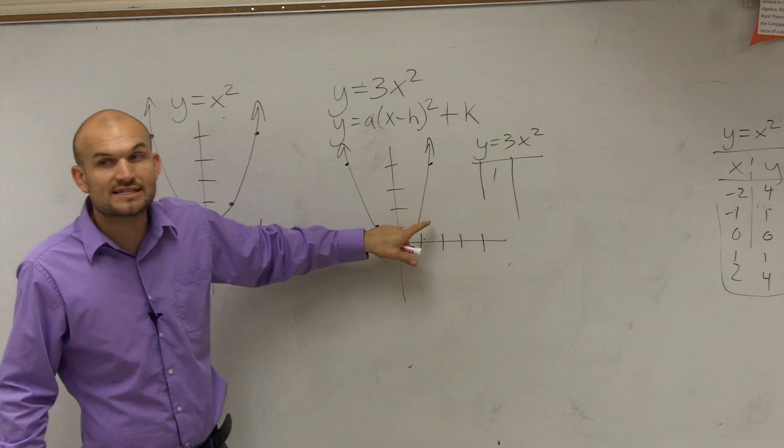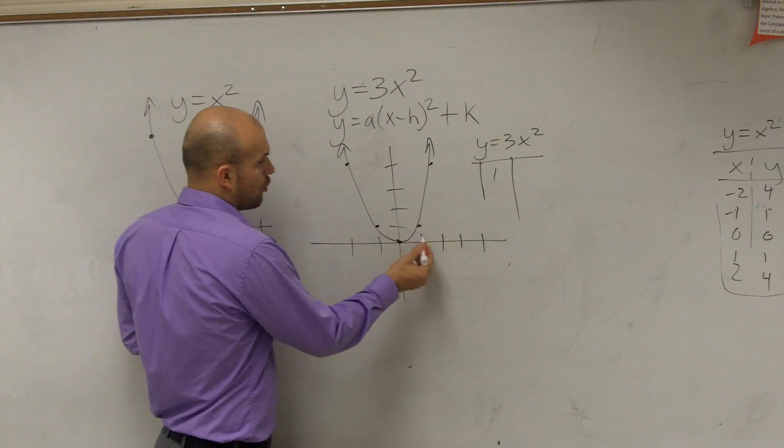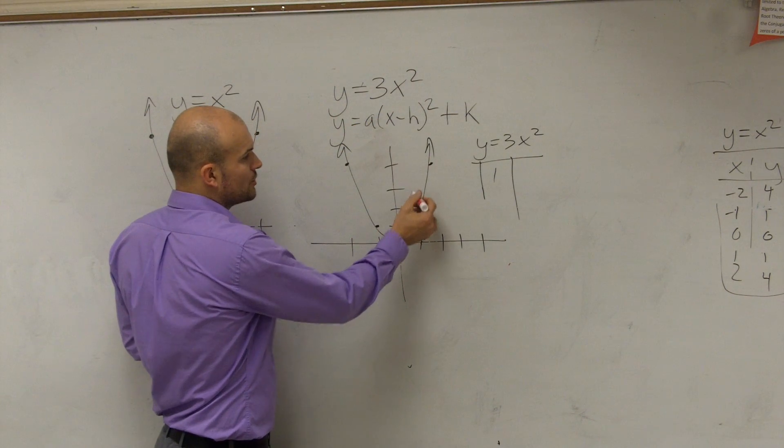But now it's 1 squared times 3. So I'm going to go over 1, up 1, 2, 3.